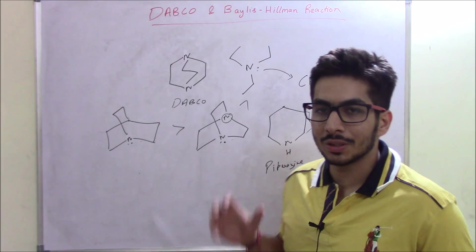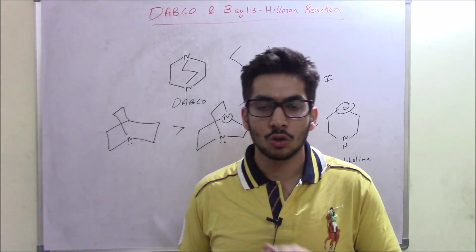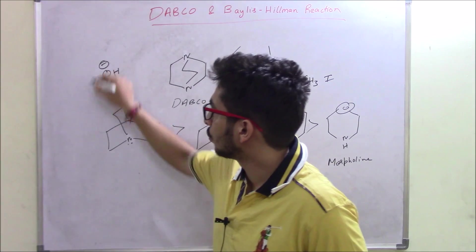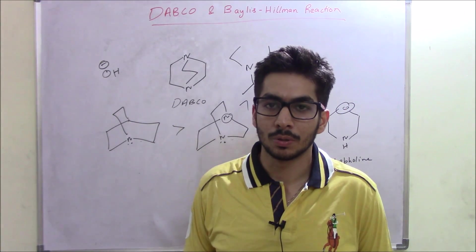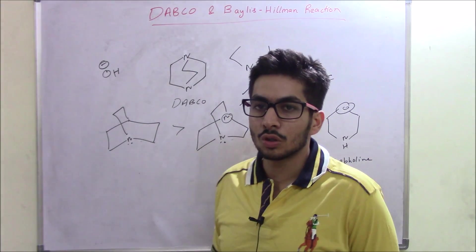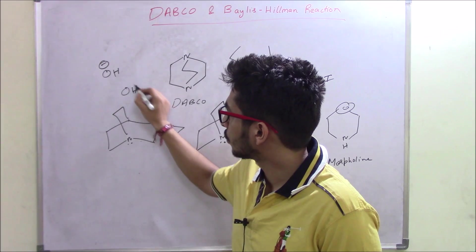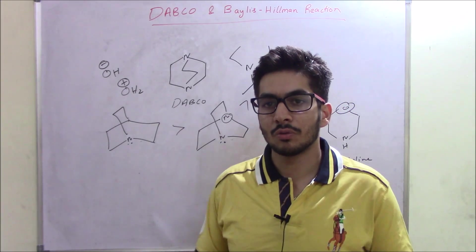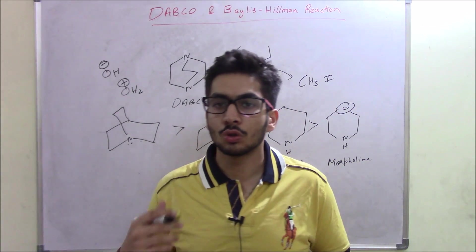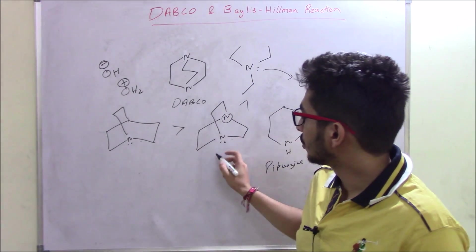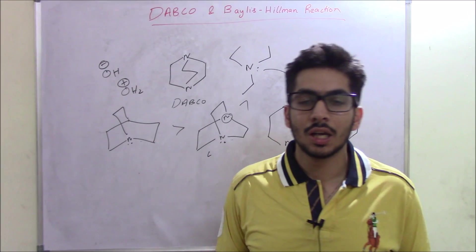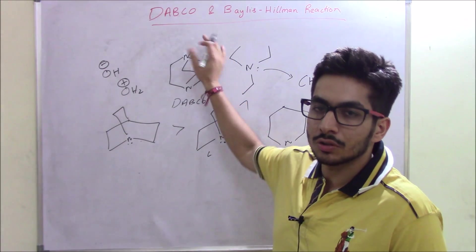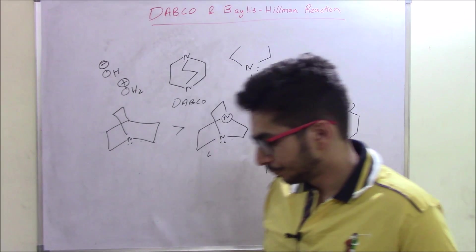One important property of DABCO is that generally good nucleophiles are not very good leaving groups. For example, OH minus is a good nucleophile but not a good leaving group, whereas the oxonium ion is a good leaving group but OH minus is not. However, that is not the case with DABCO — DABCO is both a very good nucleophile and a very good leaving group, which is why it's such an important reagent in the Baylis-Hillman reaction.